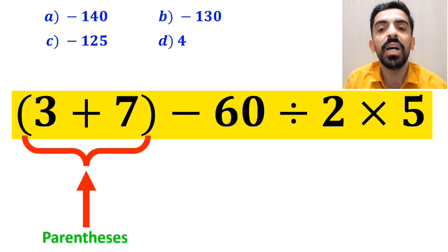Alright, now let me show you how to solve this expression properly. As you can see on the screen, in this expression, first we have a parenthesis, then a subtraction sign, followed by a division, and finally a multiplication.